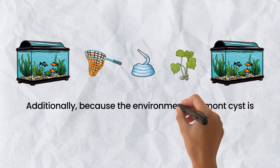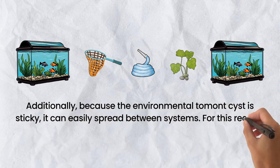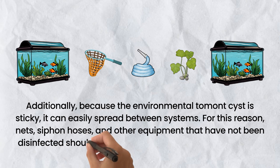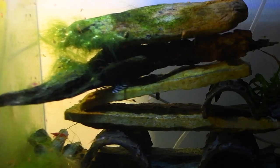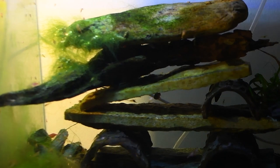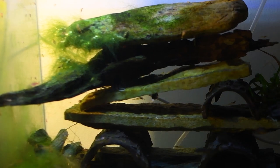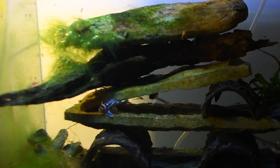Because the environmental tomont cyst is sticky, it can easily spread between systems. Nets, siphon hoses, and other equipment that have not been disinfected should not be shared between tanks, especially in a quarantine area. Similarly, freshwater plants or other structures that may have been exposed to infected fish may carry tomont stages. The parasite may also be spread by aerosolization of water mist or spray, so nearby systems should be watched carefully.